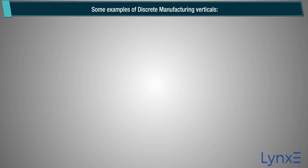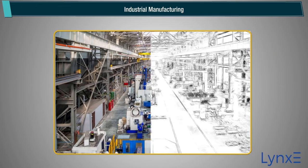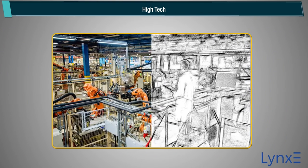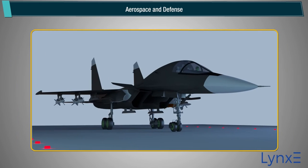Some examples of discrete manufacturing verticals: Industrial Manufacturing, High Tech, Automotive, Aerospace and Defense.